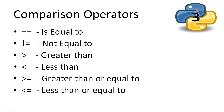The common comparison operators used for boolean expressions are: equals to (==), not equals to (!=), greater than (>), less than (<) where the left hand side is less than the right hand side, the greater than or equal to operator (>=) which is either equal to the value or greater, and the less than or equal to operator (<=) which is less than followed by the equals sign.